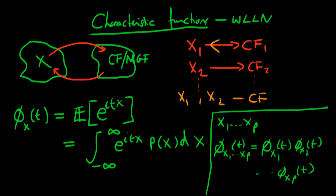Another nice property is that φ(aX)(t) is the same as φ(X)(at). This is easy to see because if I multiply X by a, I get e^{i·t·a·x}, but that's the same as parameterizing in terms of a·t instead of t while keeping x as it was — since e^{i·t·a·x} = e^{i·(at)·x} and the order of multiplication doesn't matter.